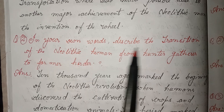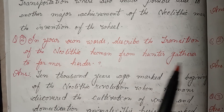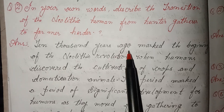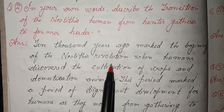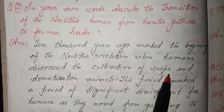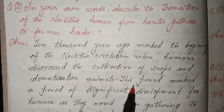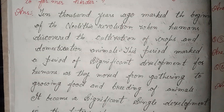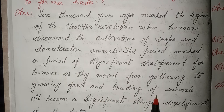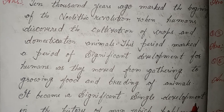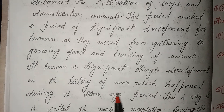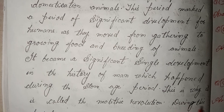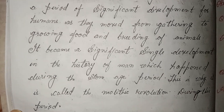Question two: In your own words, describe the transition of Neolithic humans from hunter-gatherers to farmers. Answer: 10,000 years ago marked the beginning of the Neolithic Revolution, when humans discovered the cultivation of crops and domestication of animals. This period marked significant development for humans as they moved from gathering to growing food and breeding animals. It became a significant single development in the history of mankind which happened during the Stone Age period. This is why it is called the Neolithic Revolution.